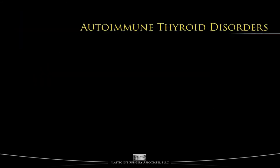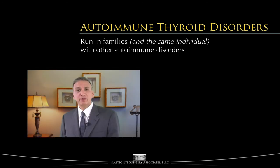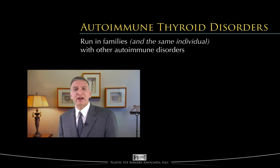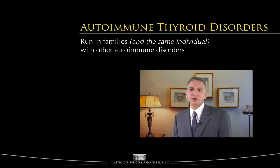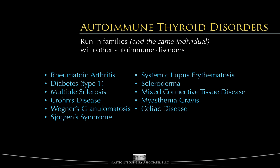Autoimmune disorders, like autoimmune thyroid disorders, run in families and within an individual. A person with one known autoimmune disorder has a greater chance than other people of having another autoimmune disorder. Someone with an autoimmune thyroid disorder may find that their mother, father, or siblings also have the same or other autoimmune disorders. Unfortunately, autoimmune disorders are quite frequent, and some of the more common disorders include rheumatoid arthritis, some forms of diabetes, lupus, and celiac disease.